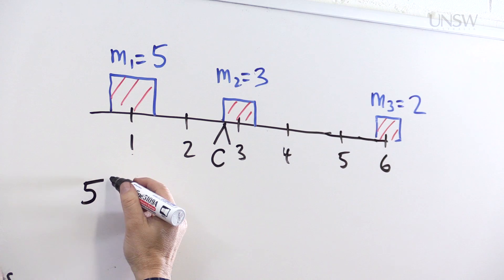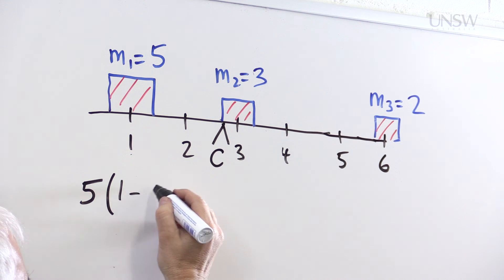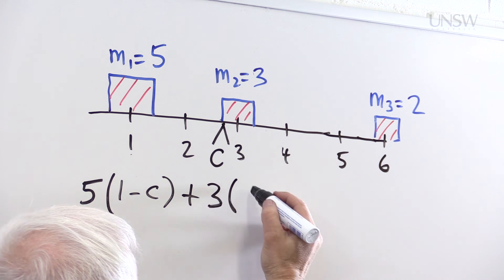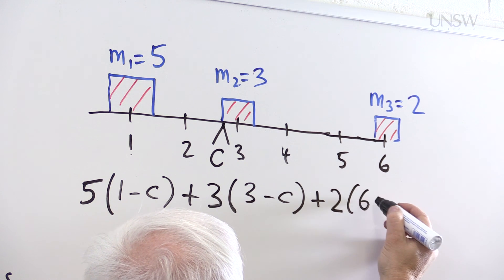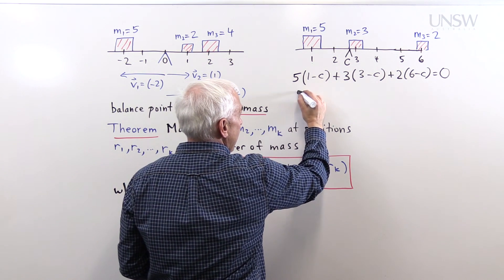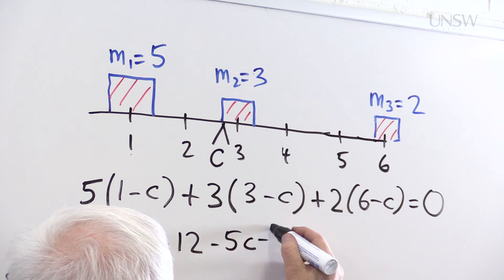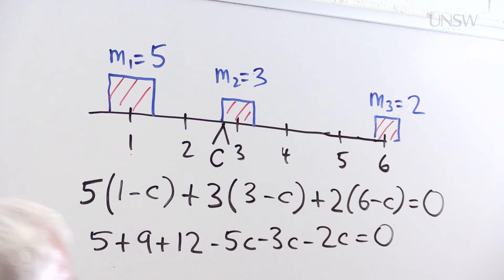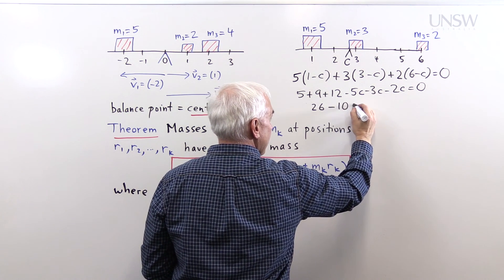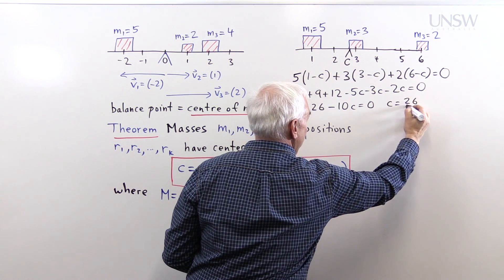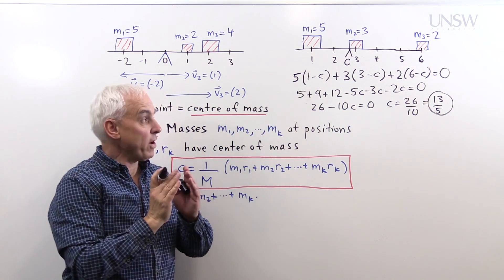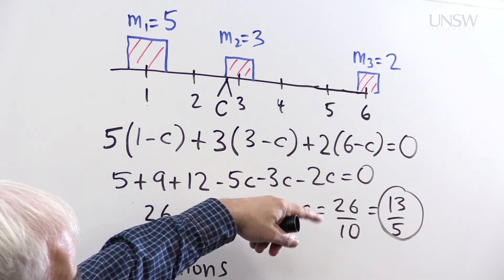So the first mass of five, we have to multiply it by the vector that's going from C to one. That's the vector one minus C. The second mass of three is multiplied by the vector from three to C, which is three minus C. And the final mass of two is multiplied by the vector six minus C. And all together, that should equal zero if we have balance. Well, that's the equation 5 plus 9 plus 12 minus 5C minus 3C minus 2C equals zero. And so 5 plus 9 plus 12, that's 14 plus 12, that's 26, minus a total of 10C equals zero. So C equals 26 over 10, or if we like, 13 over 5. That's then the position of the point where these three masses balance. That's the center of mass. And it's somewhere just a little bit less than 3.